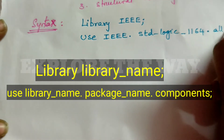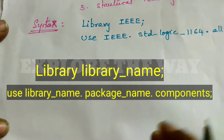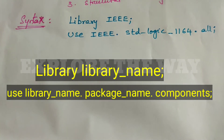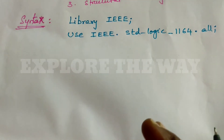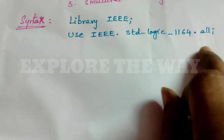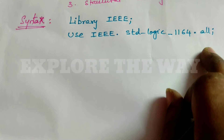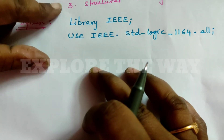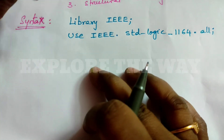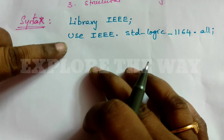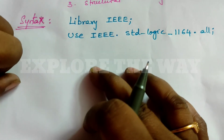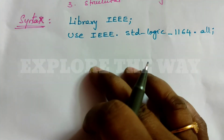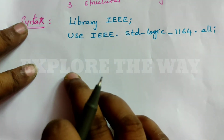From this package, you list out what components you are going to use. Suppose you are using all the components — in that case, you should write 'all'. So this is the library part. If you are using any other packages along with standard logic, you can declare them here as well.